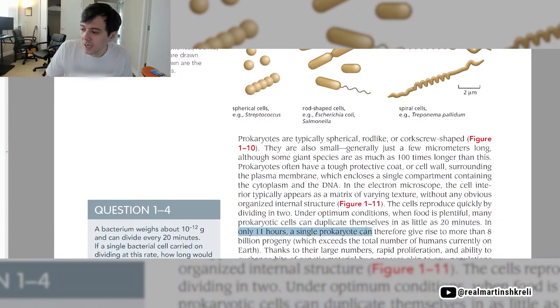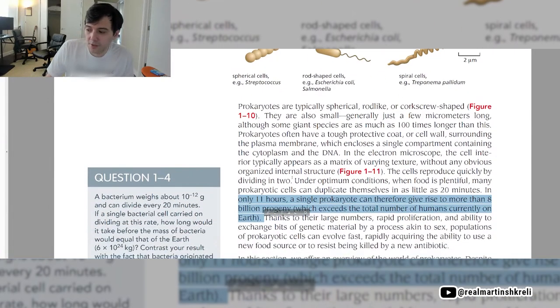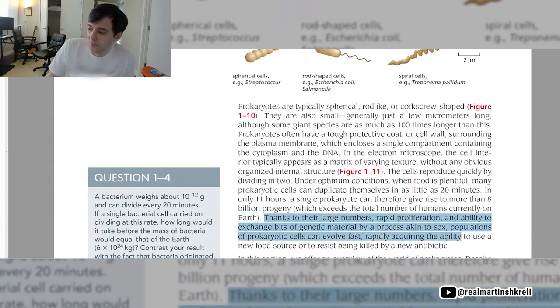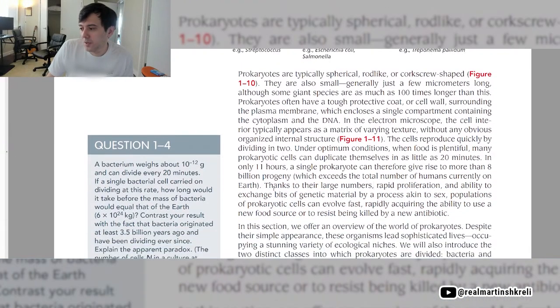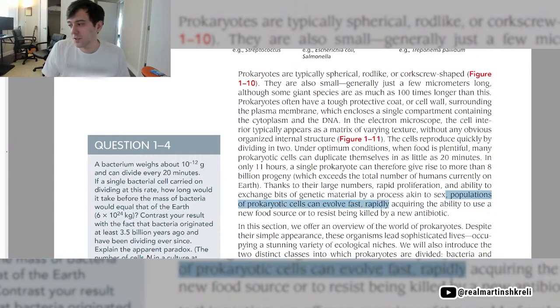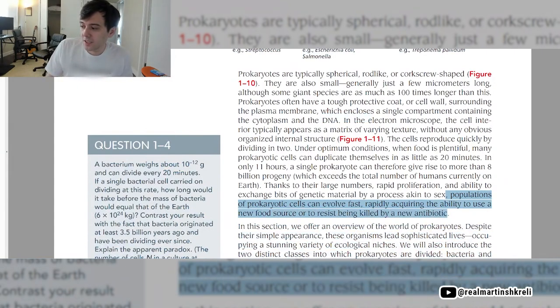In only 11 hours, a single prokaryote can give rise to more than 8 billion progeny. 8 billion from one, amazing. That's the power of exponents. Thanks to their large numbers, rapid proliferation, and ability to exchange bits of genetic material by a process akin to sex, they're sort of autosexual. Populations of prokaryotic cells can evolve fast, rapidly acquiring the ability to use a new food source or resist being killed by a new antibiotic.